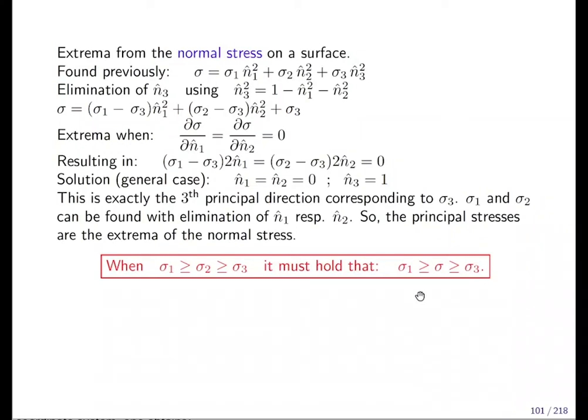So now in this section, finally I have shown you what is the extreme normal stress. The maximum is sigma one—we could have guessed that before but now we have shown it by mathematical derivation. And sigma three is the minimum and all normal stresses can only be in between.